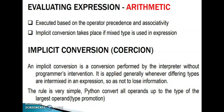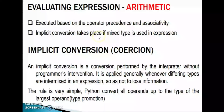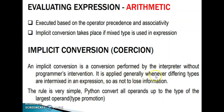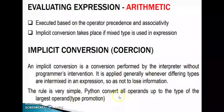How can we evaluate an expression? For arithmetic expressions, they are executed based on operator precedence and associativity. Implicit conversion takes place if a mixed type is used in an expression. The rule is simple: Python converts all operands up to the type of the largest operand.